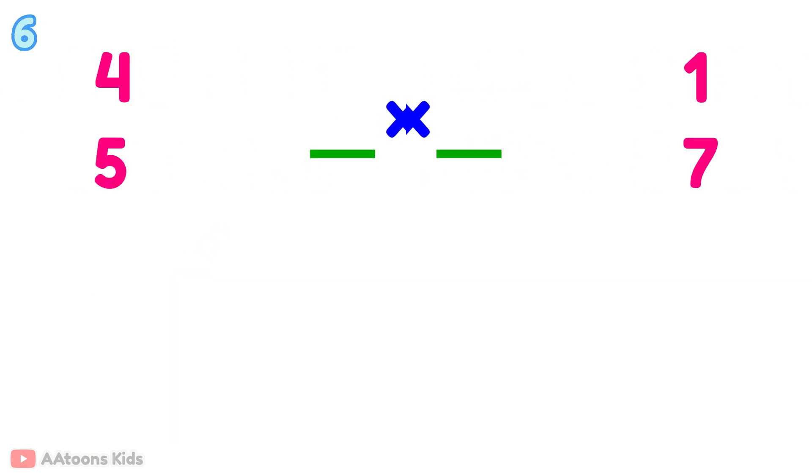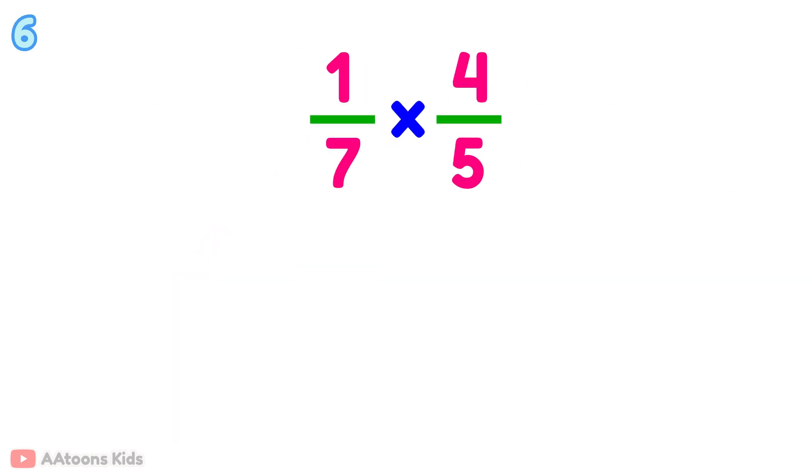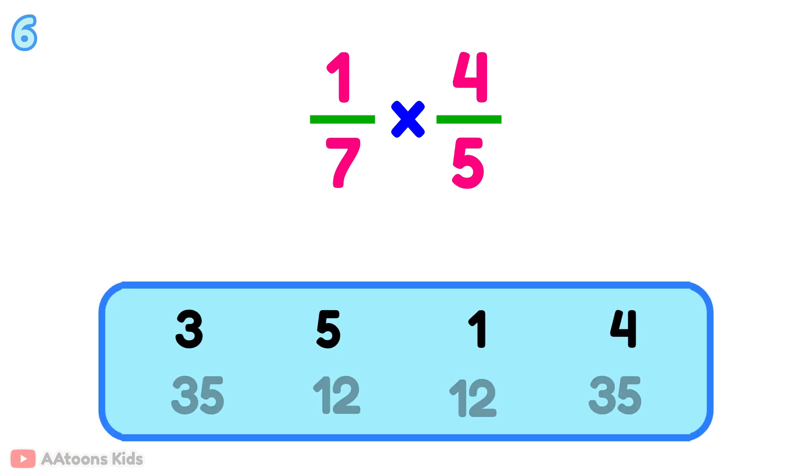What is 1 over 7 multiplied by 4 over 5?